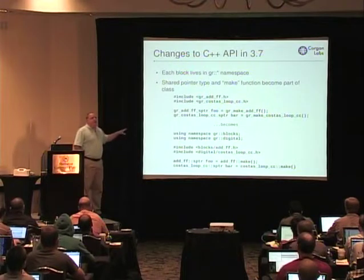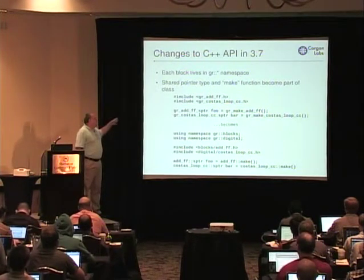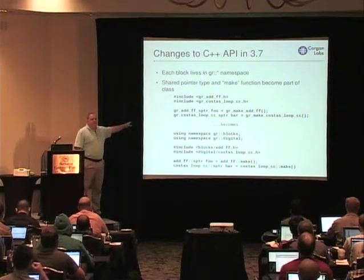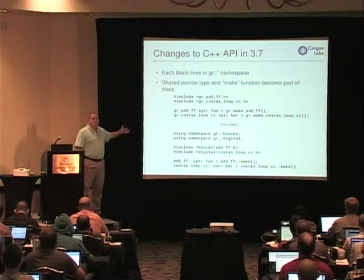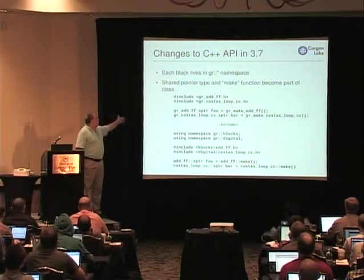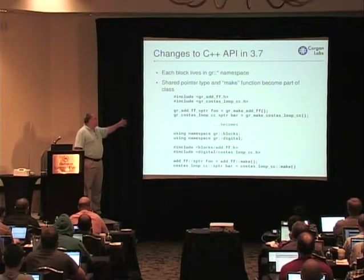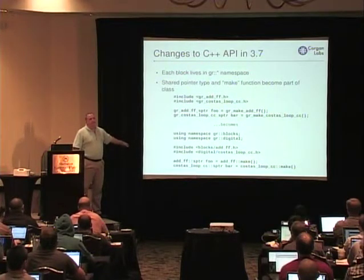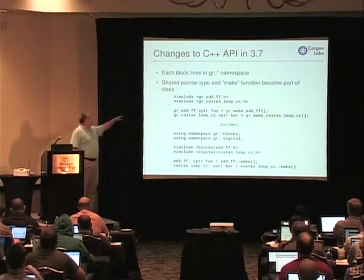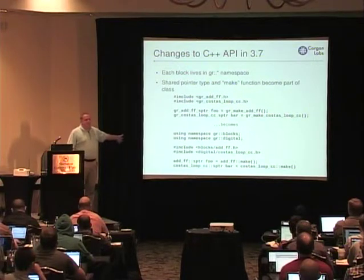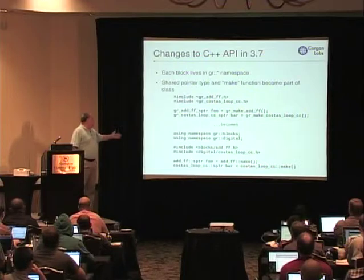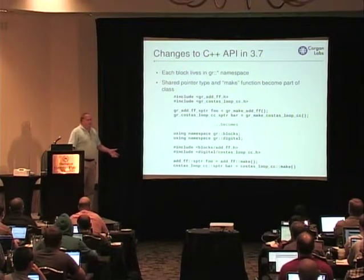With the code reorganization, we're taking the opportunity to change the API to use C++ namespaces. This is an example of old code and new code — relatively minor and possibly even automated changes. Before we had this flat namespace, like gr_costas_loop_cc, and separate factory functions that would create shared pointers. Everything is now inside a class defined in a namespace for that component. The add_ff block moving into the Blocks component — using namespace gr::blocks, you just call the make function that's part of that class, and that'll be consistent across all the blocks.